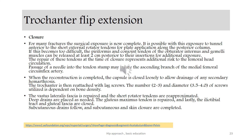When the reconstruction is completed, the capsule is closed loosely to allow drainage of any secondary hemarthrosis. The trochanter is then reattached with locking screws — number 2, 3, diameter 3 and 3.5, and 4.0 mm cortex screws. The vastus-trochanteric fascia is repaired and the short external rotator tendons are reapproximated. Deep drains are placed as needed, the gluteus maximus tendon is repaired, and lastly the iliotibial tract and gluteal fascia are closed.